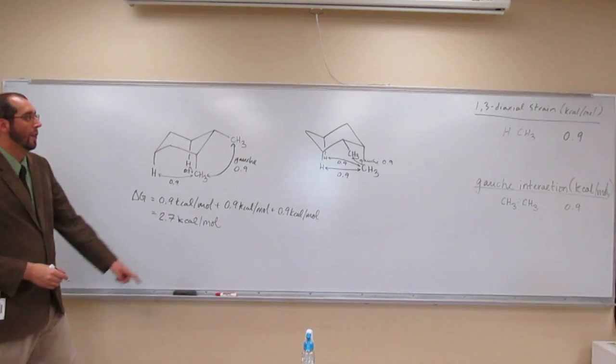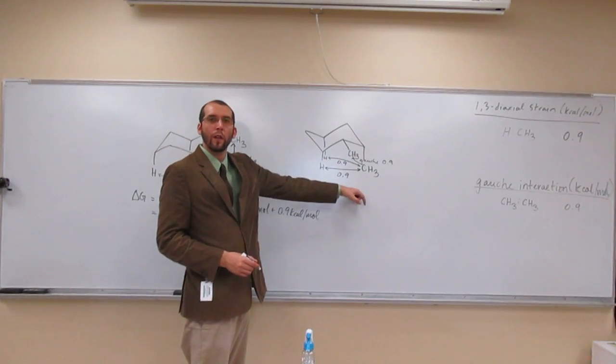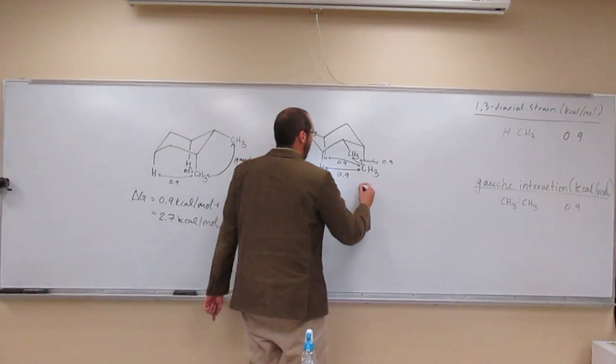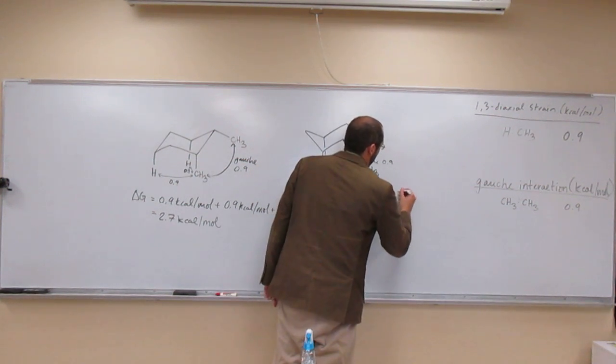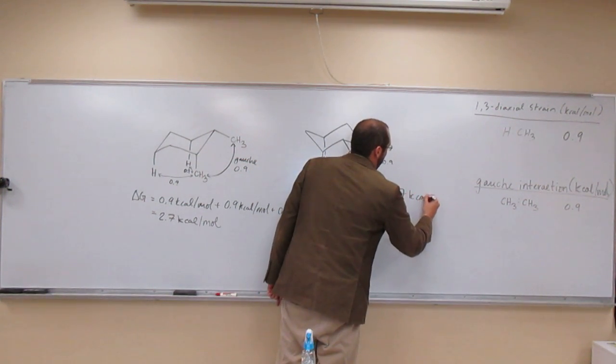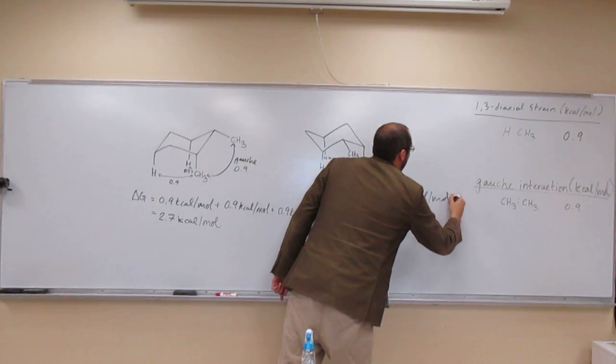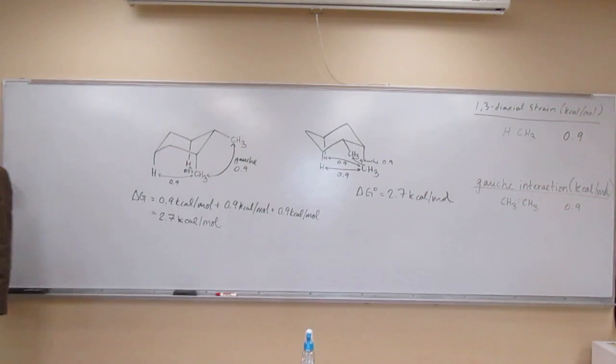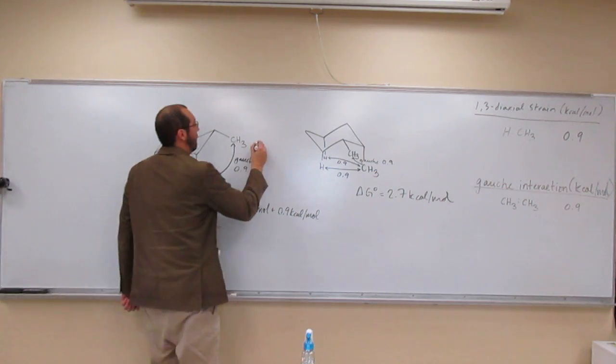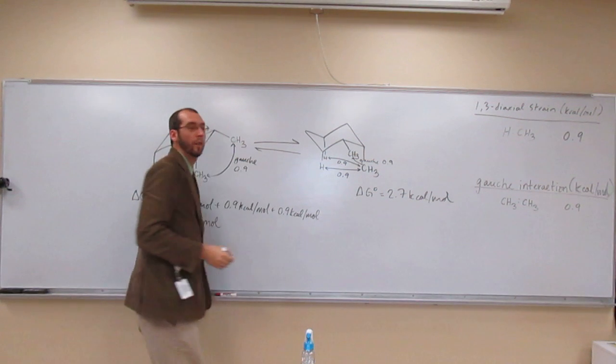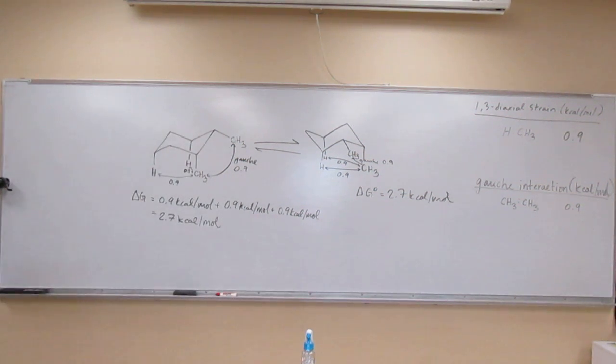So what's the energy of this one? 2.7 kcals per mole. So which one is more stable? They're equivalent. So this is kind of a tricky question. So when we're going to put the arrows, we're going to do like that. Any questions on that one? The reason I wanted to do this one is to show you both the 1,3-diaxials and to find that gauche interaction.